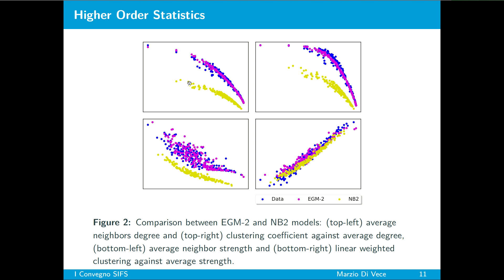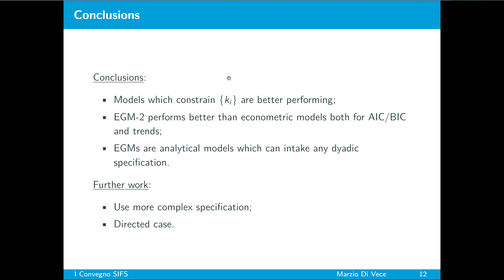Instead for the econometric basket we see that negative binomial is the best performing. Finally we see the plots for higher order statistics in this case for average neighbor's degree, binary clustering coefficient, average neighbor strength and weighted clustering coefficient.